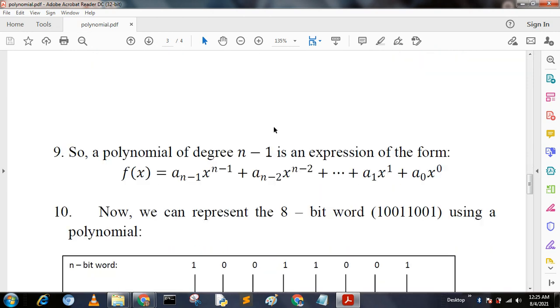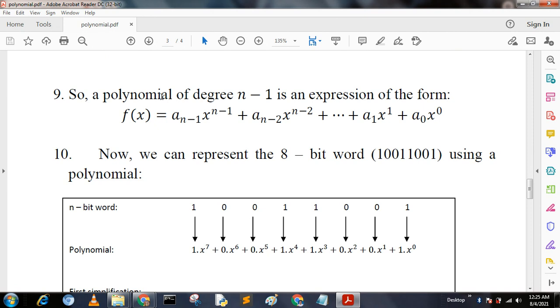So a polynomial of degree n-1 is an expression of the form: f(x) equals a_{n-1} times x^{n-1} plus a_{n-2} times x^{n-2} plus dot dot dot plus a_1 x^1 plus a_0 x^0.